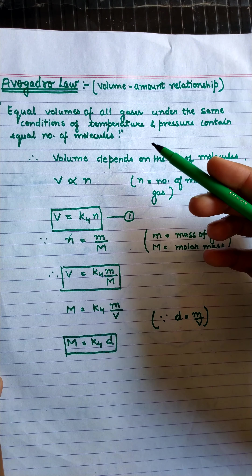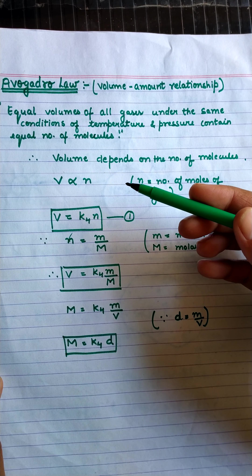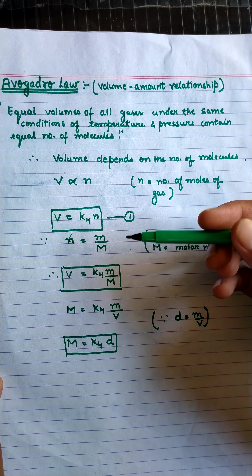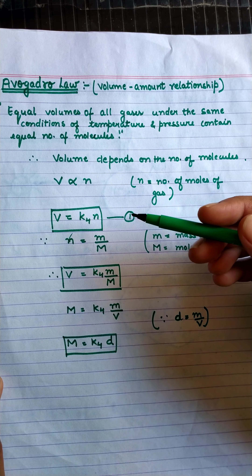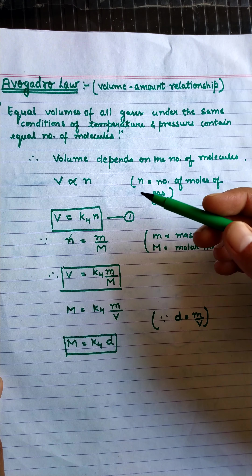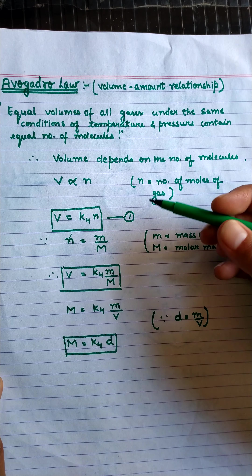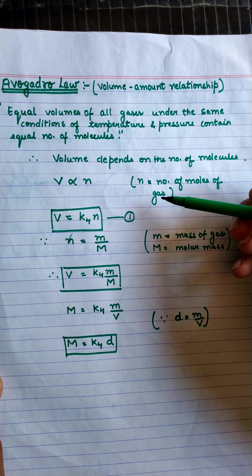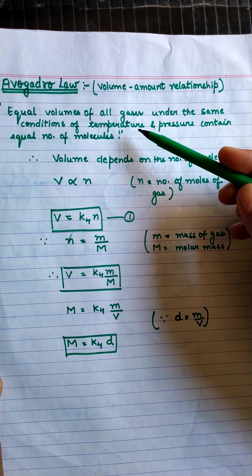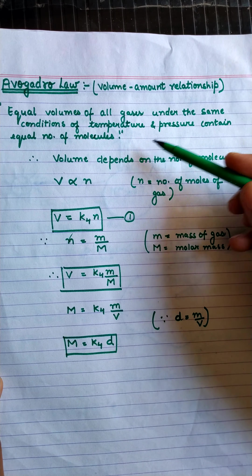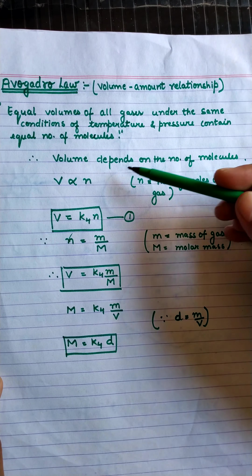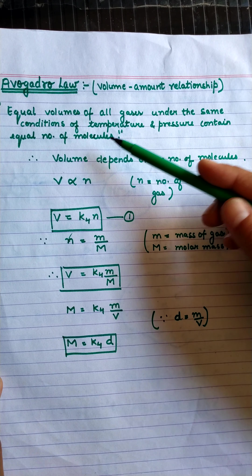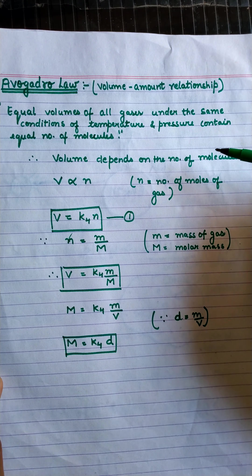If we keep temperature and pressure constant, the volume of a gas will depend on the molecules of gas, or we can say on the amount of gas, or the number of moles of gas. We will see that the volume will be the same if we keep the temperature and pressure constant, and volume depends on the number of molecules.